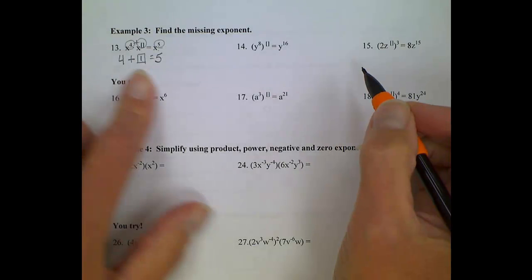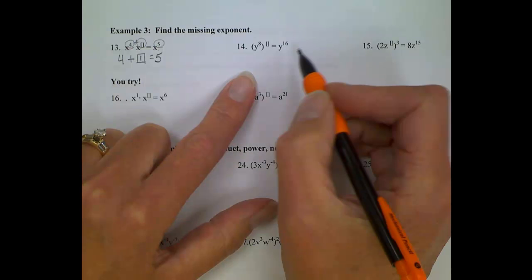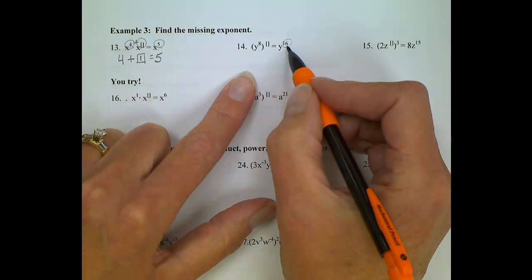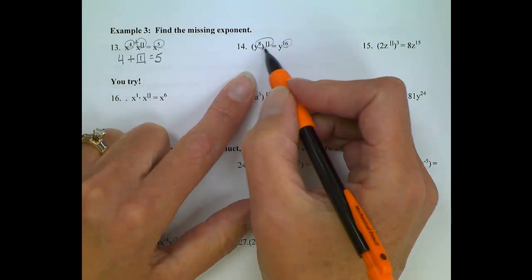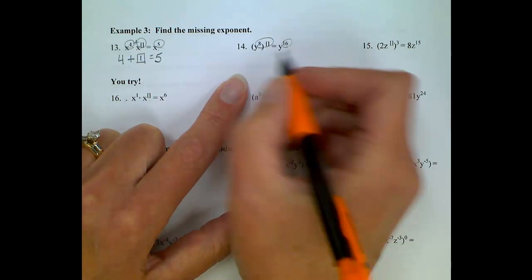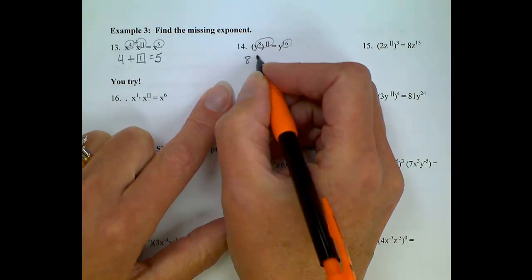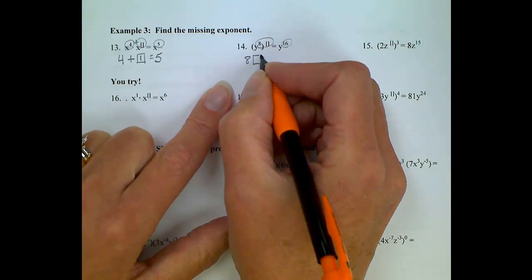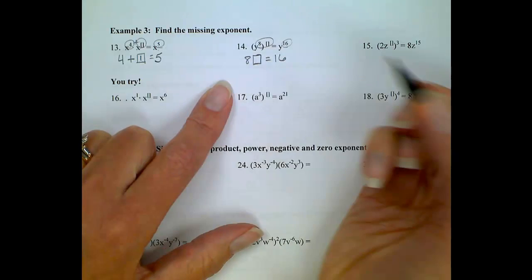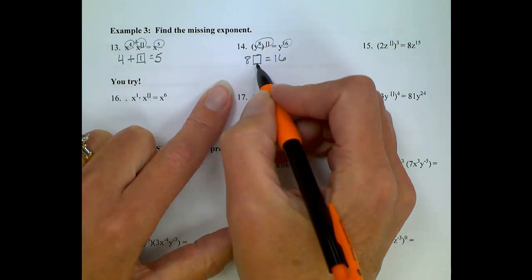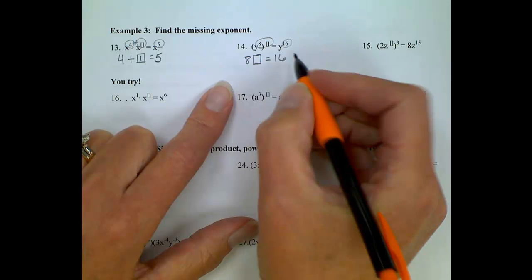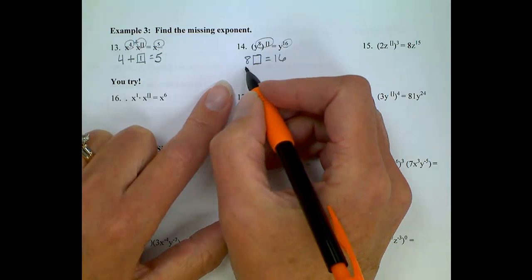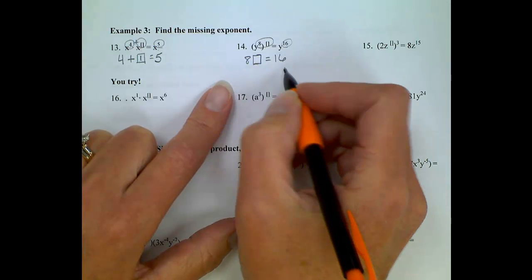Number 14. They give you the answer of 16. You have a power to a power. What do you do with exponents when you have a power to a power? You multiply them. So you have 8 times the missing value equals 16. How do you find that missing value? Well hopefully we know our math facts, and we know that 8 times 2 is 16. Otherwise you could sort of treat this like a variable, divide both sides by 8. Your answer will be 2.